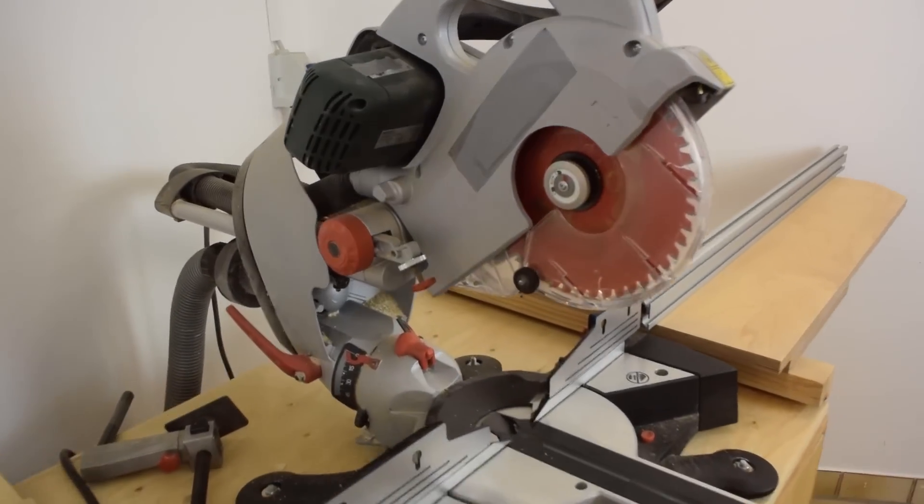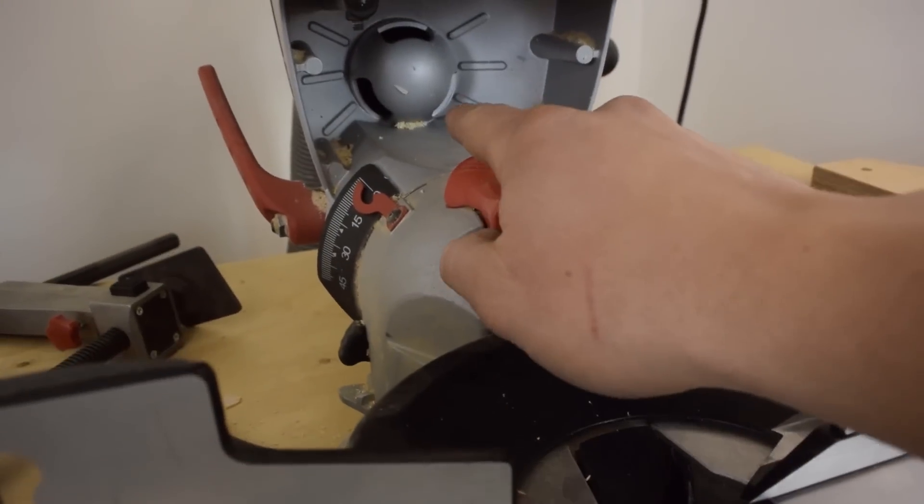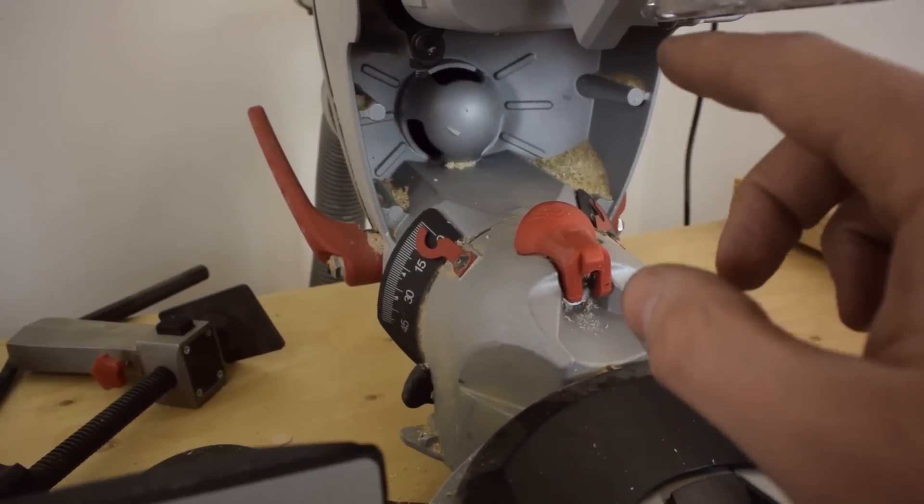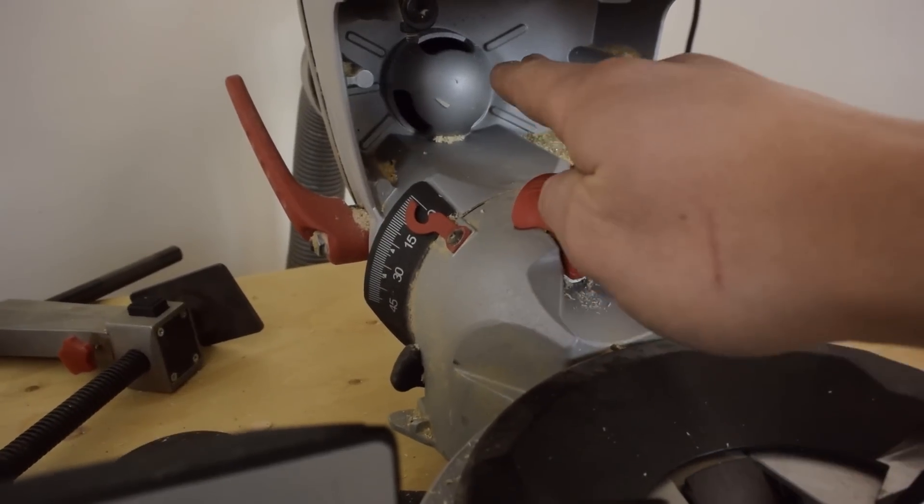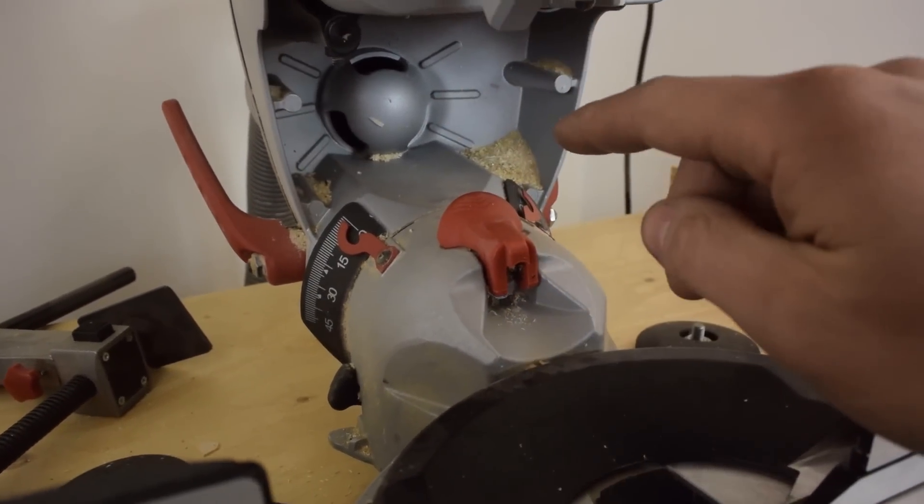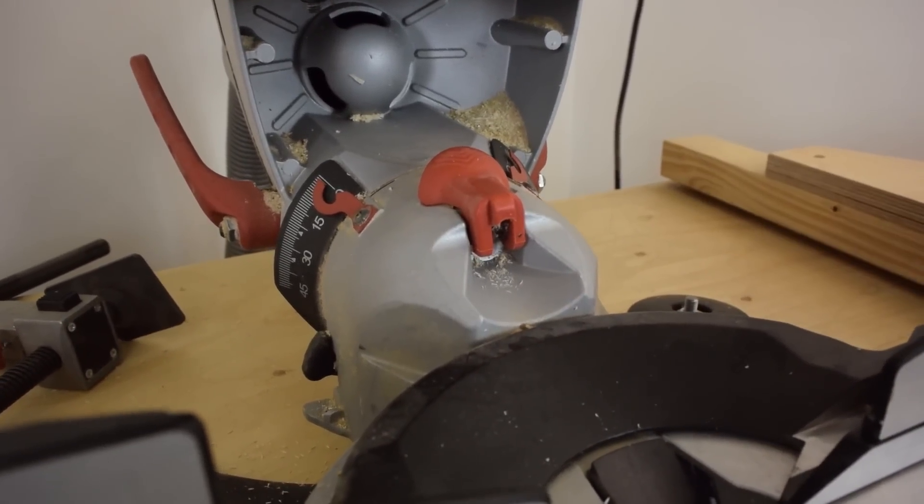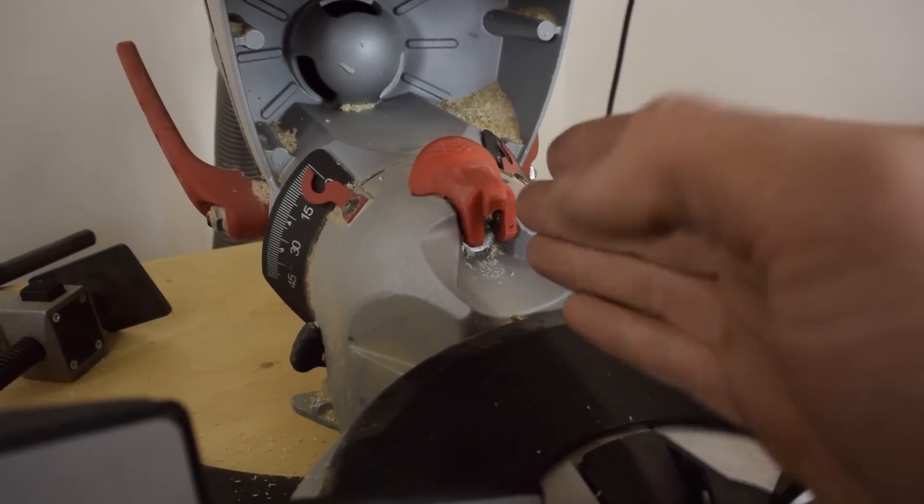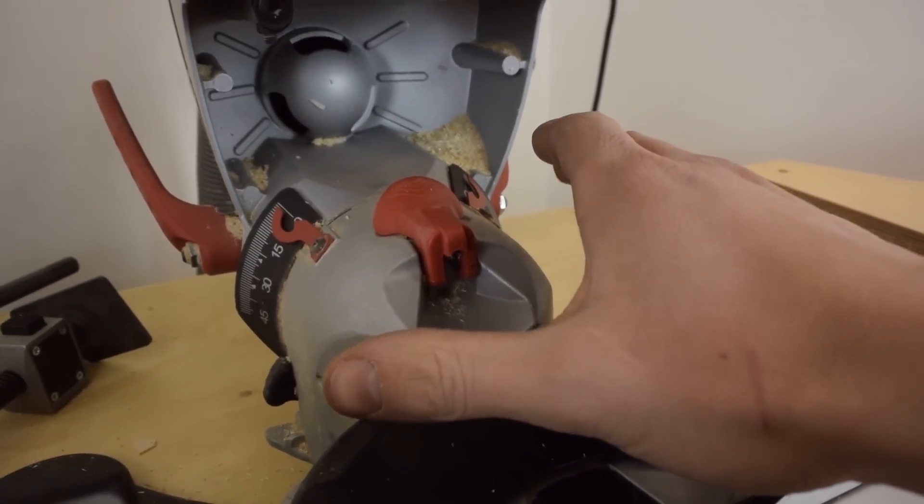The saw has two dust ports, one up here and then this nice big shroud back here. Now that would have been a good idea, but instead of making it a smooth transition into the shroud, they put this little knob here. What that means is a lot of the shavings that end up flying in this direction hit this little knob and get deflected outwards.